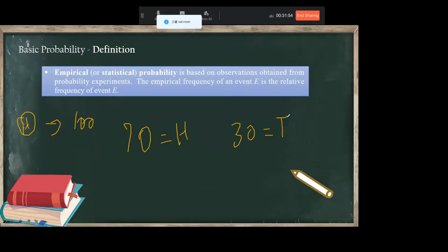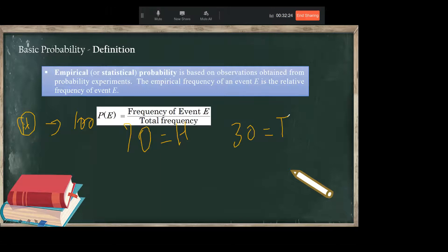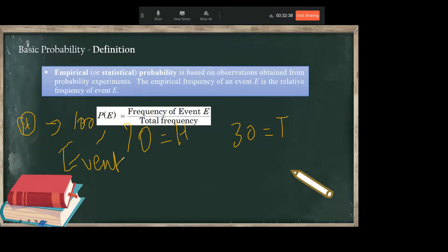In my experiment there are 70 heads and 30 tails if I toss the coin 100 times. Now I can calculate the probability — in my case the probability of heads is 70% because the outcome of heads is 70 times out of 100 observations. Similarly we can observe how many times outcomes appear when rolling a die, calculate the probability, and link it with relative frequency. You can also roll two dice 1,000 or 10,000 times and make a frequency table.